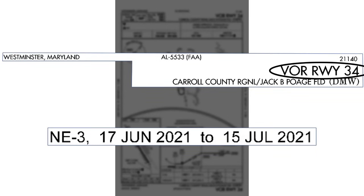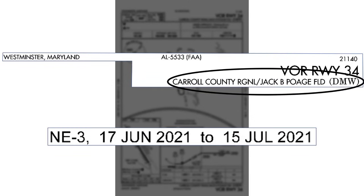Most importantly, there's the actual procedure title. What we have here is the VOR runway 34 — VOR being the type of navigation aid used for the approach, and runway 34 being the runway the approach is to. Not all approaches go to a specific runway, but this one provides for a straight-in approach to runway 34 using a VOR. Finally, you have the name of the airport and the identifier: Carroll County Airport, identifier Delta Mike Whiskey — the full four-character one would be Kilo Delta Mike Whiskey.